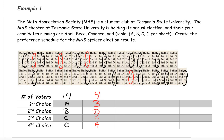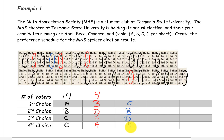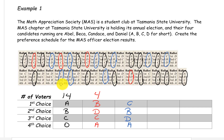Moving on to the next ballot we haven't circled yet. That has the preference order C, B, D, A. So we'll circle all of them that have the preference C, B, D, A. And we can see that there are 10 of them.